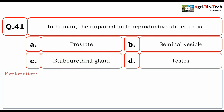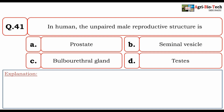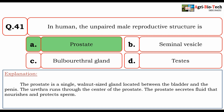Next question: in humans, the unpaired male reproductive structure is — A) prostate, B) seminal vesicle, C) bulbourethral gland, or D) testes. The correct answer is A) prostate. The prostate is a single walnut-sized gland located between the bladder and the penis. The urethra runs through the center of the prostate. The prostate secretes fluid that nourishes and protects sperm.